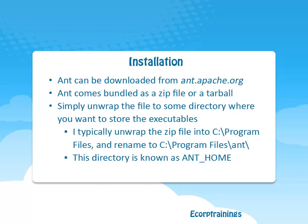Coming to Apache Ant installation. Ant can be downloaded from ant.apache.org. Apache Ant comes bundled as a zip file or a tarball. Simply unwrap the file to some directory where you want to store the executables. Typically unwrap the zip file into C:\Program Files and rename to C:\Program Files\ant. This directory is known as ANT_HOME.